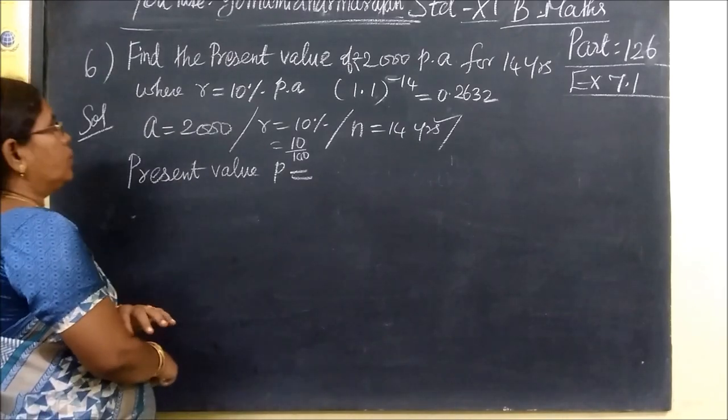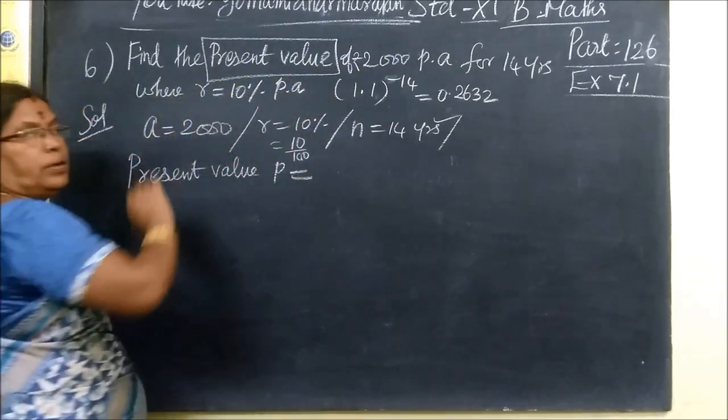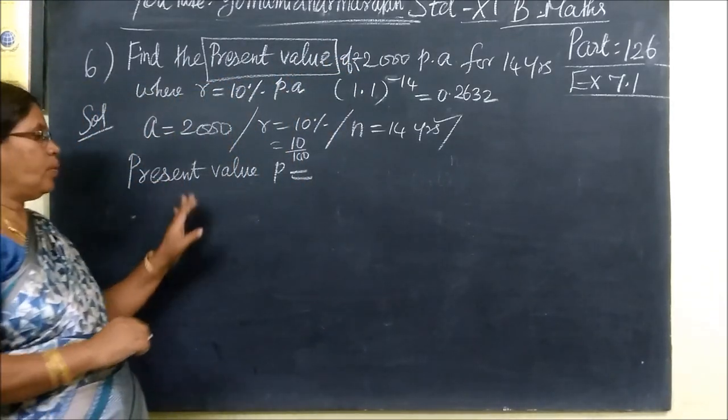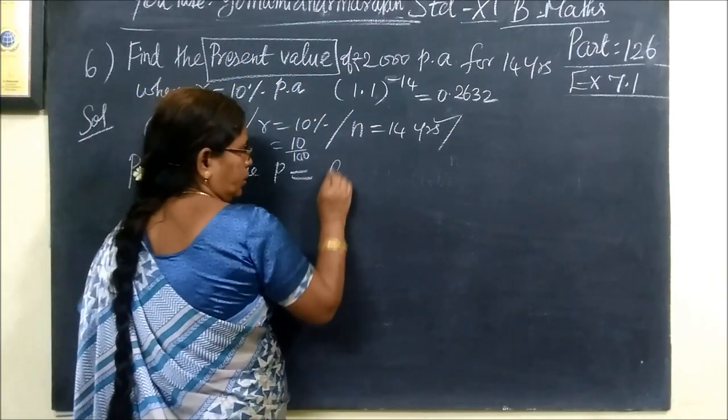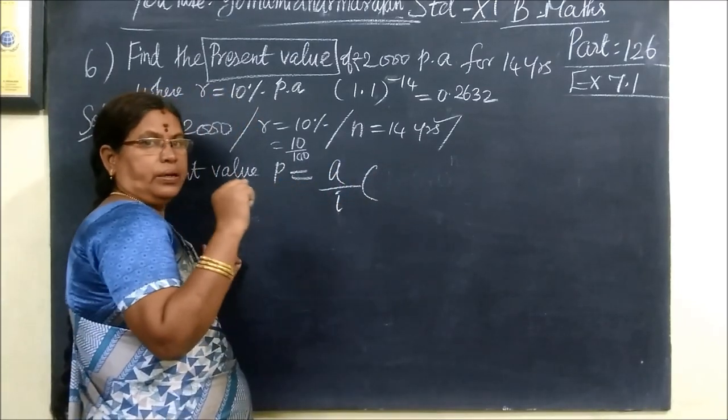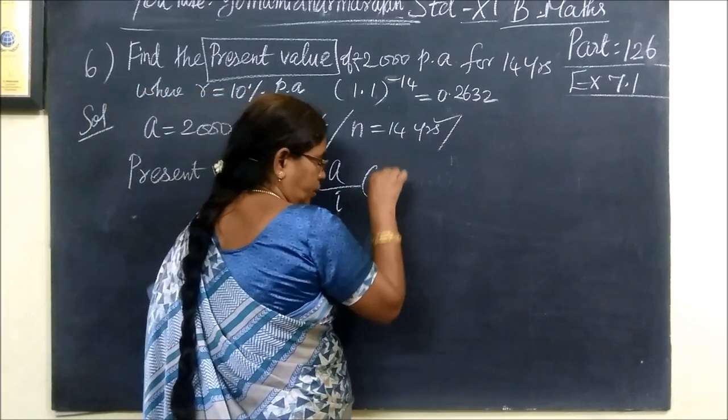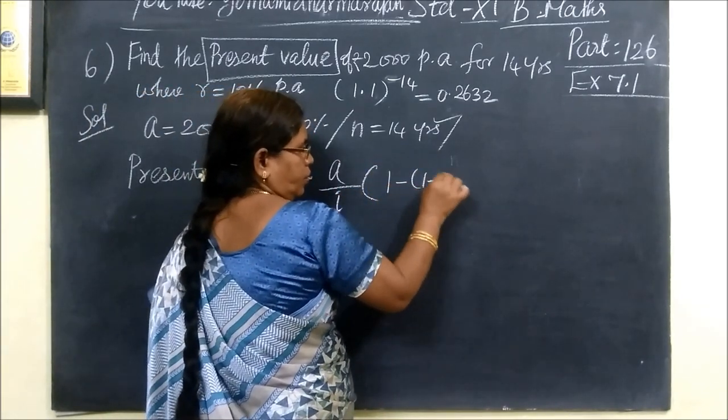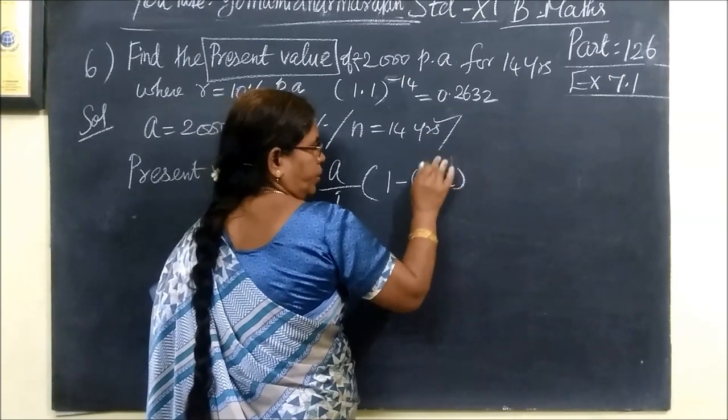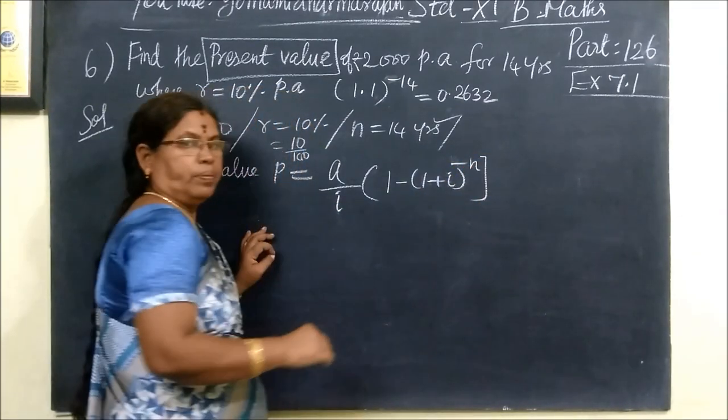So now come to the sixth question. In the present value, you are using this formula: P equals A by I, this is 1 minus 1 plus I to the power minus N.